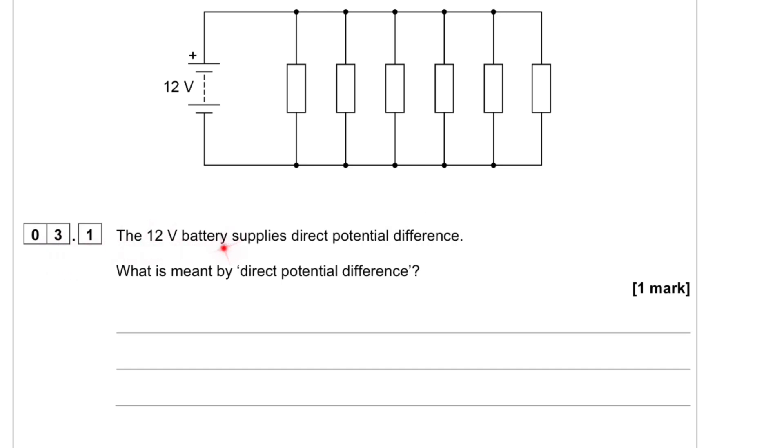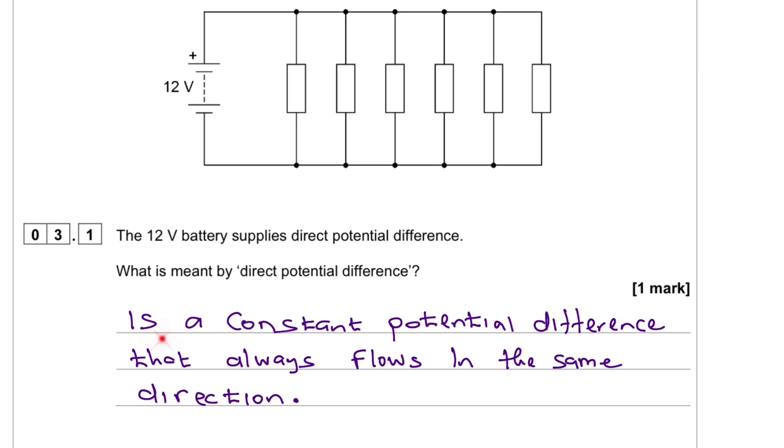Question 3.1. The 12V battery supplies direct potential difference. What is meant by direct potential difference? A direct potential difference is a constant potential difference that always flows in the same direction. This is produced by DC current sources such as the battery.